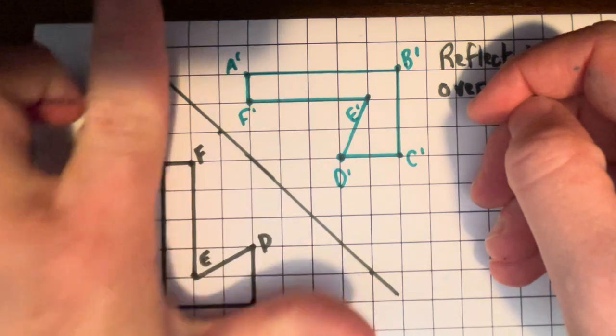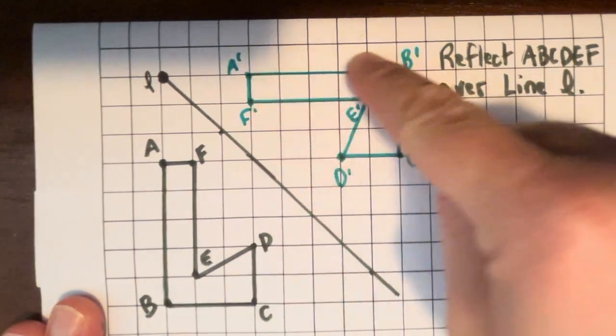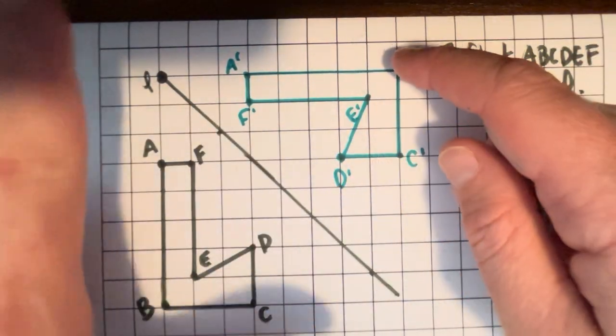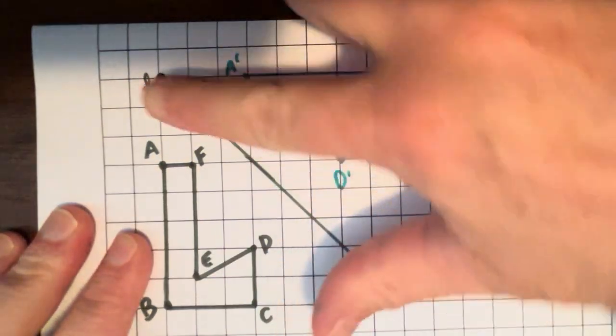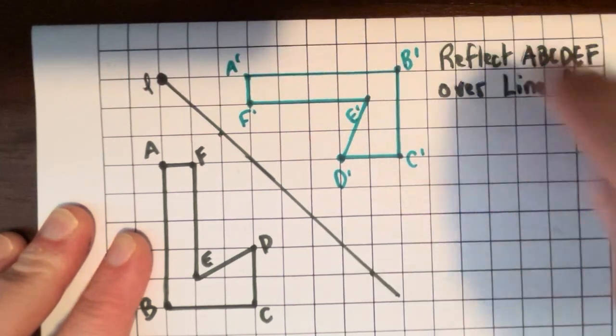So here's our L. The thing that does change, one of the things that changes with reflections is now this is a backwards L. So if I put my left hand here, it's not going to be the same. So this one is an L like with my left hand, and this is an L like with my right hand. So not an L, a backwards L. Alright.